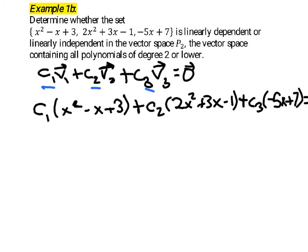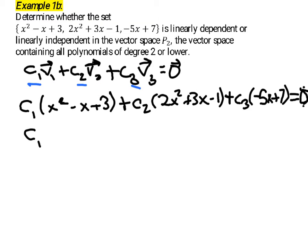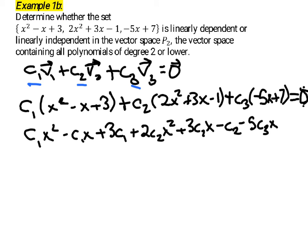Now if we distribute the scalars there, we have c1 times x squared minus c1 times x, and c1 times 3, plus 2 times c2x squared, 3c2x, and negative 1 times c2, minus 5 times c3x, plus 7 times c3.